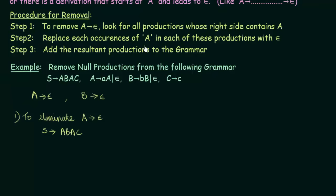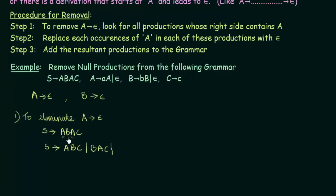In step 2, we replace each occurrence of A with epsilon. In S gives ABAC, A appears twice. Replacing the first A gives ABC; replacing the second A gives BAC; and replacing both A's gives BC. So the new productions we get for S from this step are ABC, BAC, and BC.